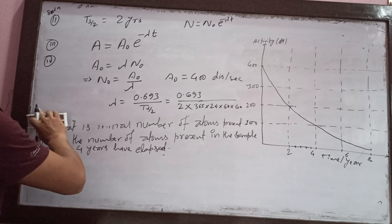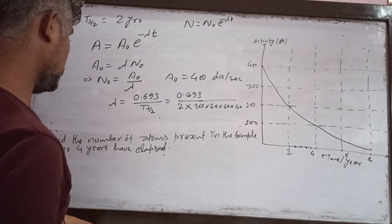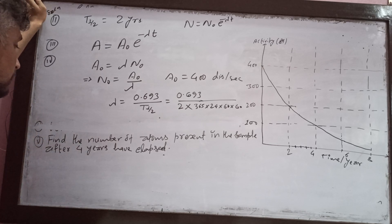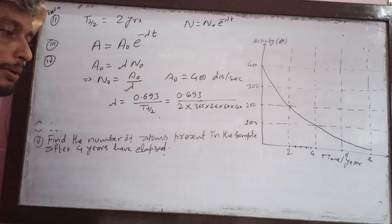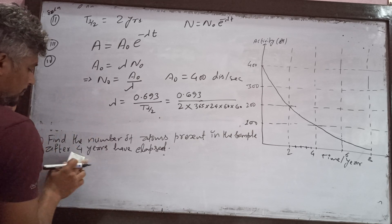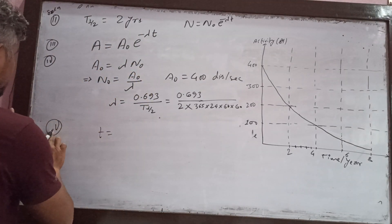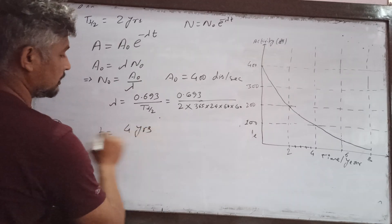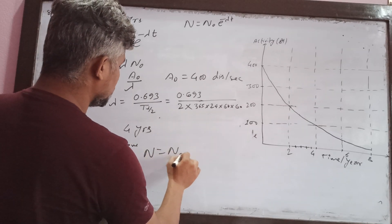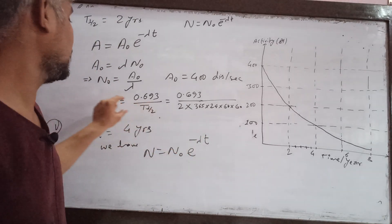Our last question: find the number of atoms present in the sample after four years have elapsed. Using the formula N is equal to N-naught times e to the power of minus lambda t. For question five, T is equal to 4 years. We calculate the lambda value and substitute T equal to 4 years into the equation.